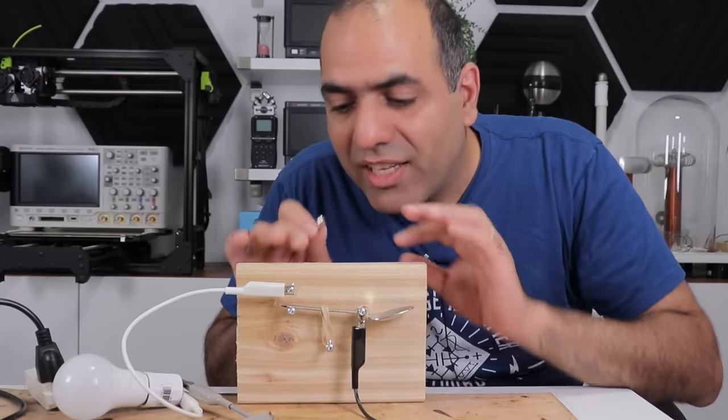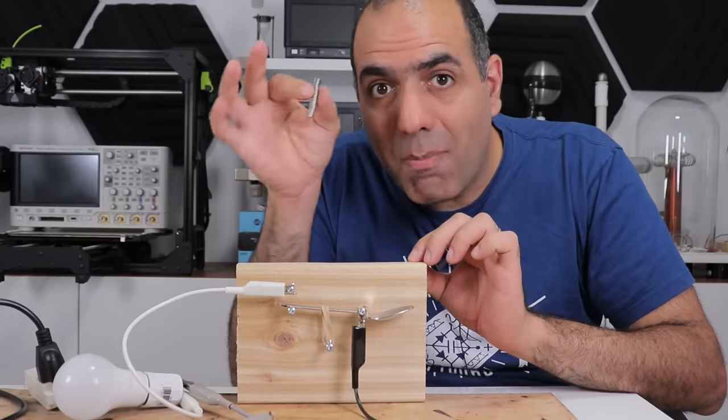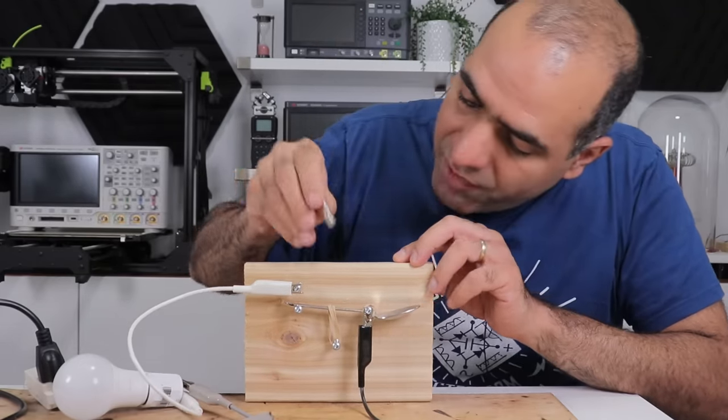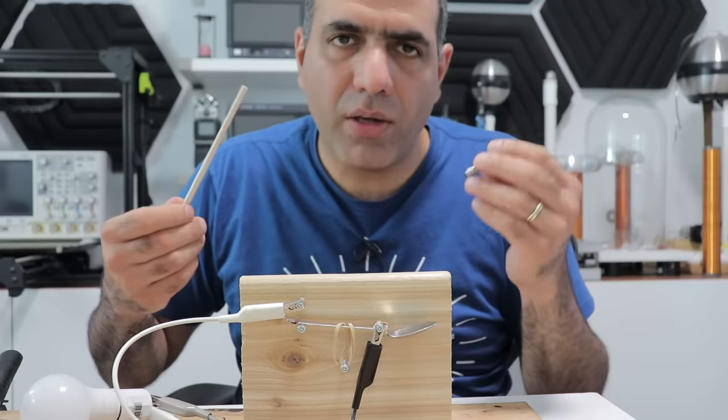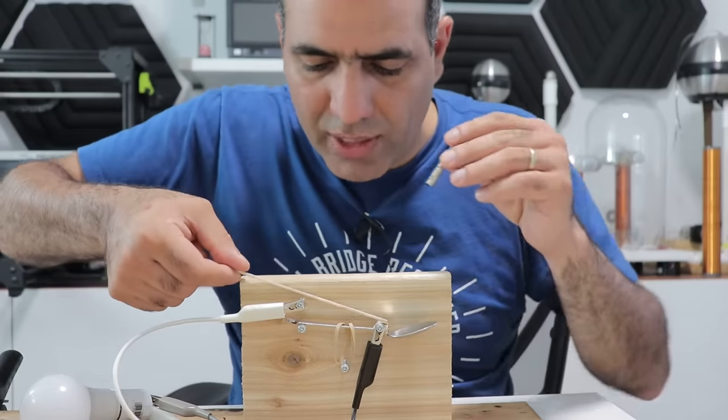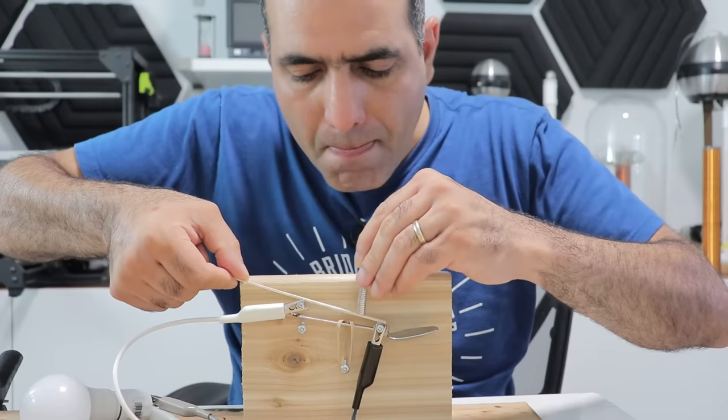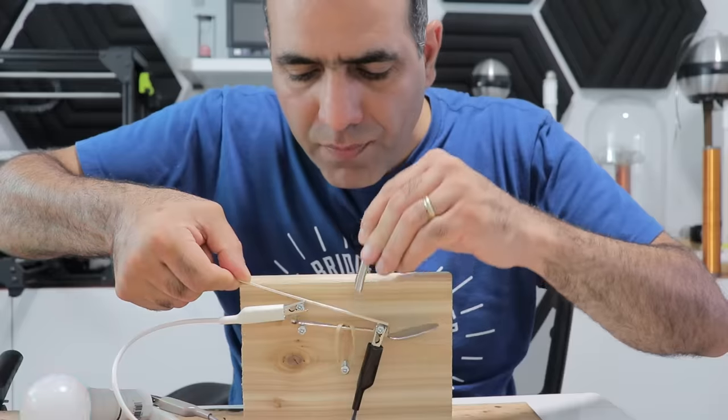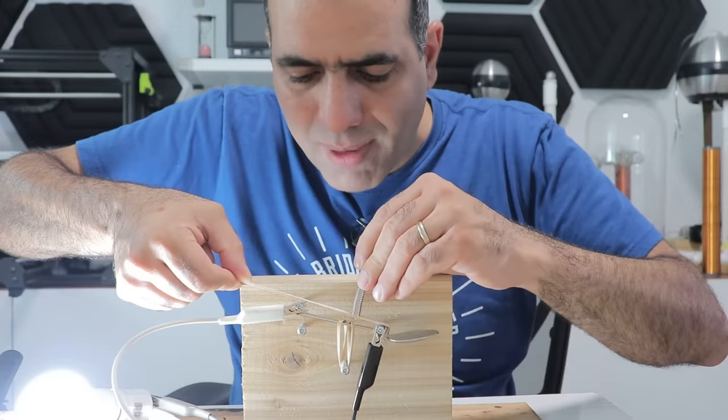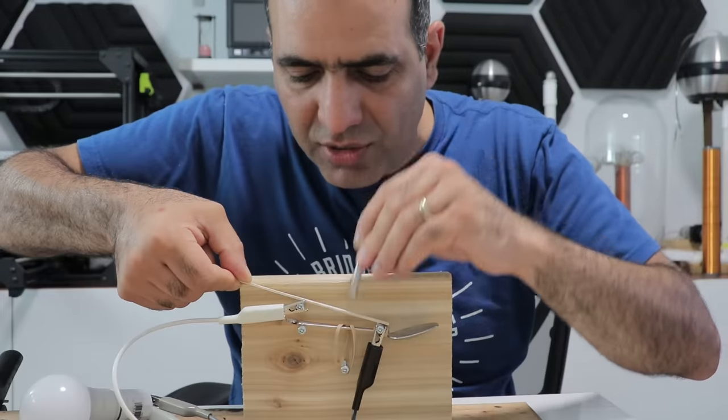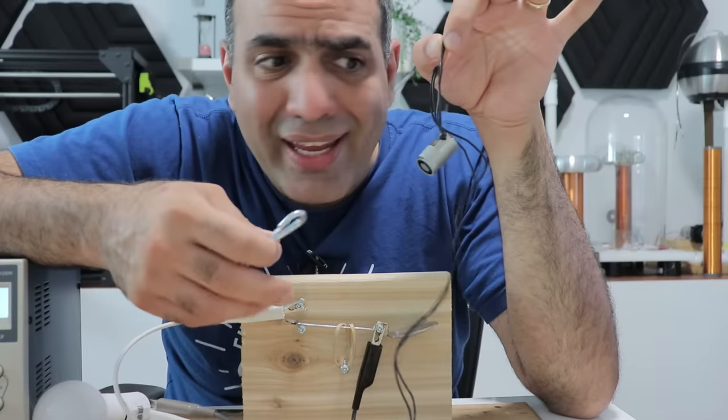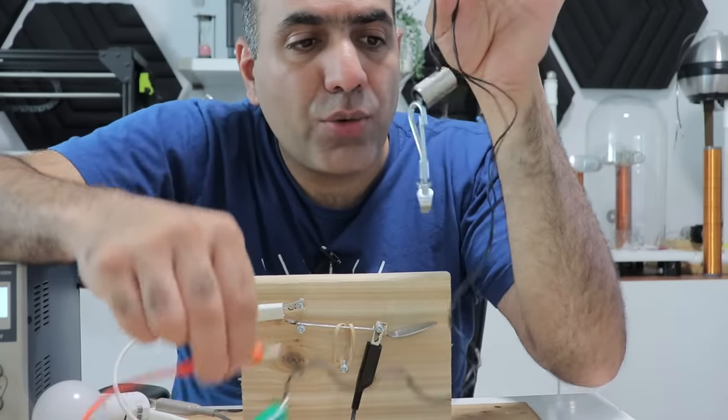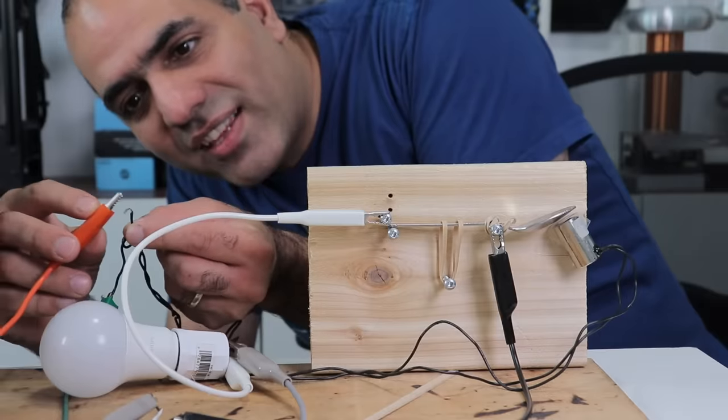In a relay, the switch actuation is done by magnetic force that pulls the lever up closing the contacts. Magnets can be quite conductive. Let's try it again with a layer of insulation. There you go. And when I let go of the magnet, the spring returns it back to the normally closed position.